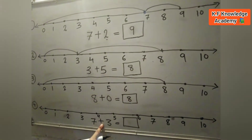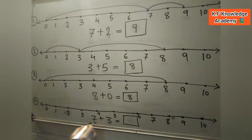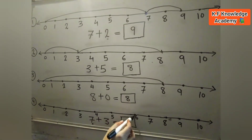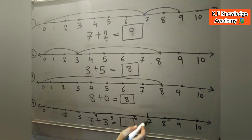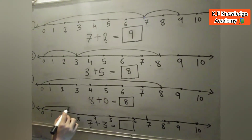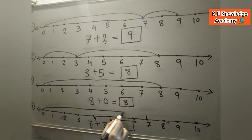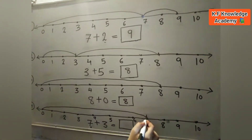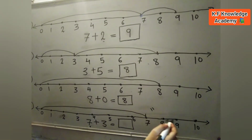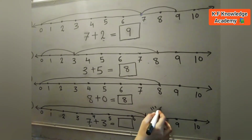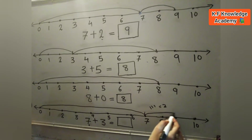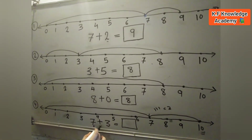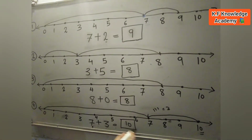In the next question, there is given 7 plus 3. We match 0 to 7 numbers, then count 3 more: 7 to 8 is 1, 8 to 9 is 2, and 9 to 10 is 3. So we match 7 to 10 — it means 7 plus 3 is equal to 10. Write 10 in the box.